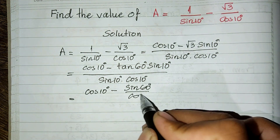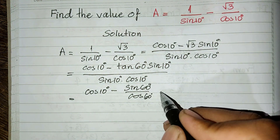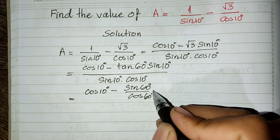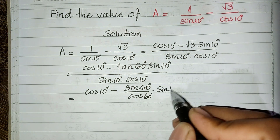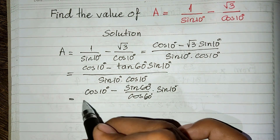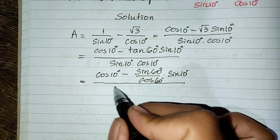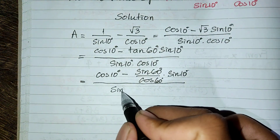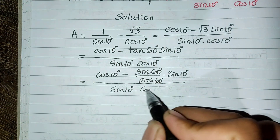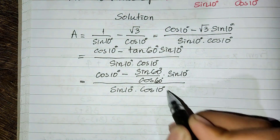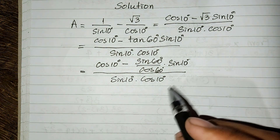And it equals cosine of 10 degrees minus this, all divided by sine of 10 degrees multiplied by cosine of 10 degrees.